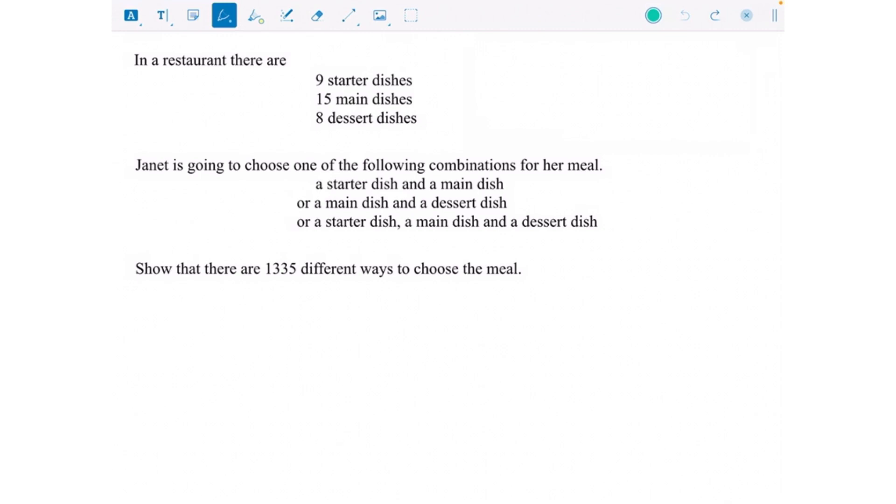Or she's going to go all out and have a starter, a main, and a dessert. Show that there are 1335 different ways to choose the meal. So for a starter and a main, how many different choices has she got? She's got nine starters to choose from multiplied by fifteen mains, so nine times fifteen is 135 options.